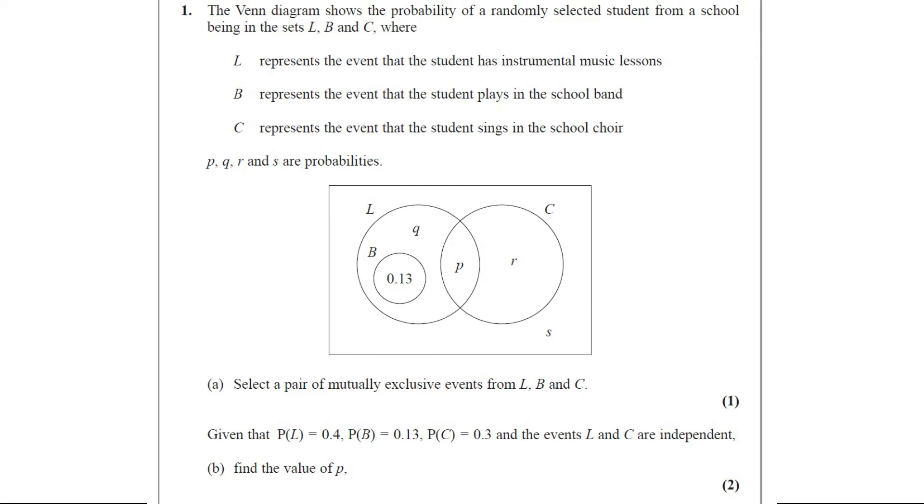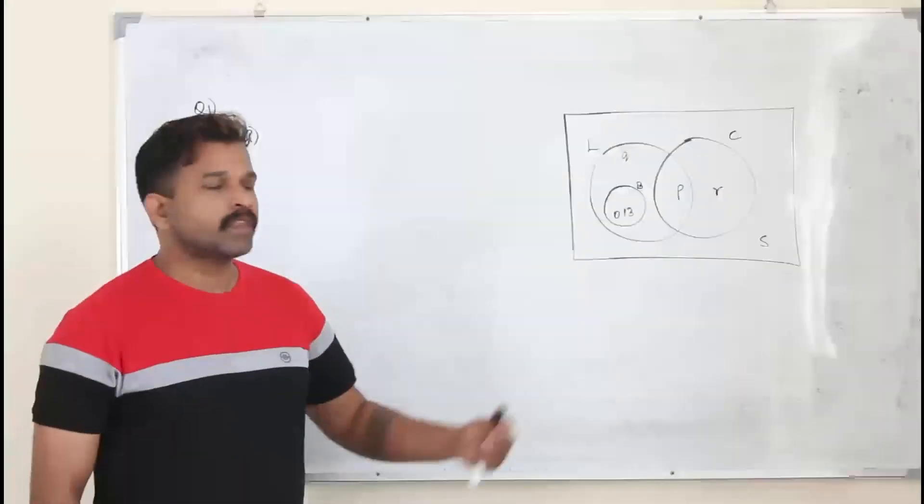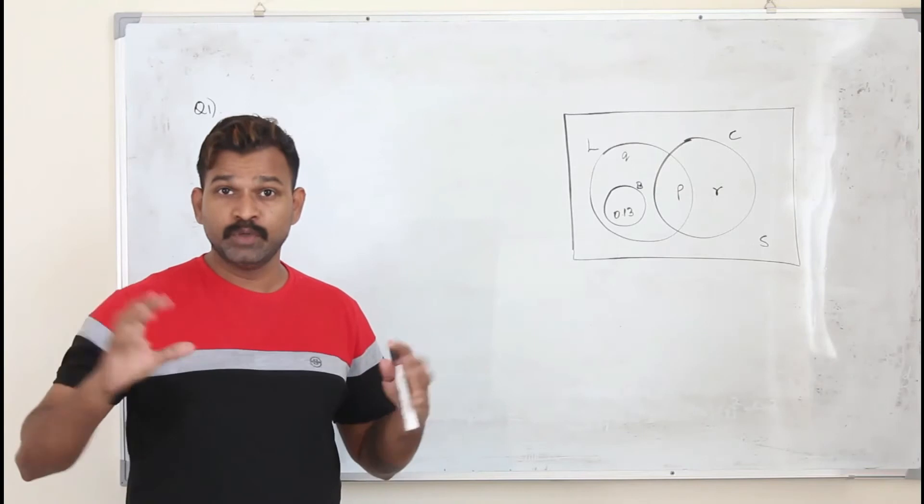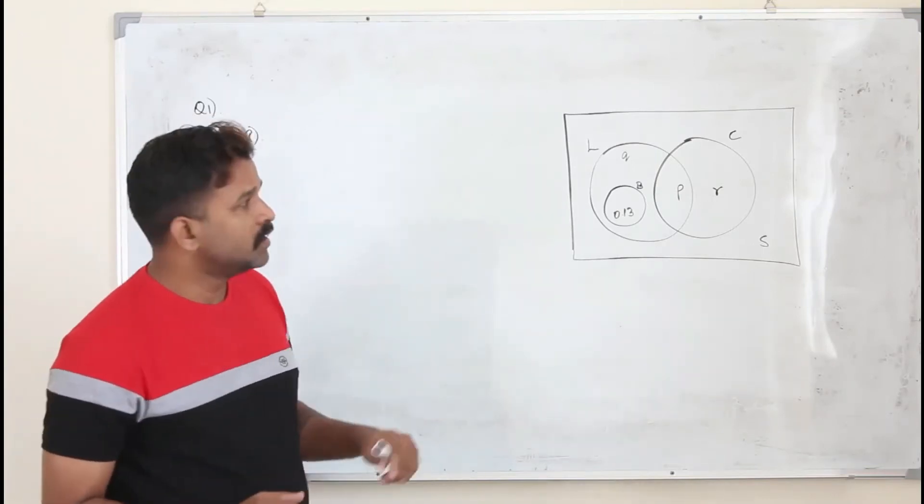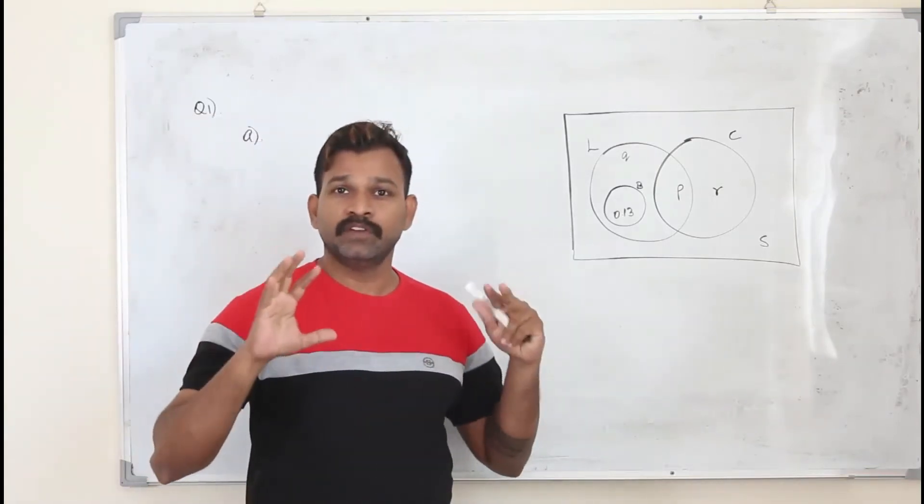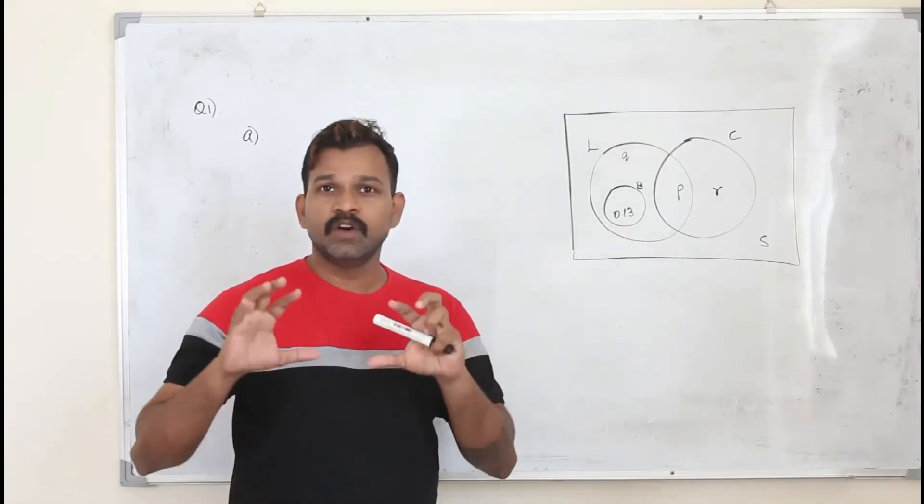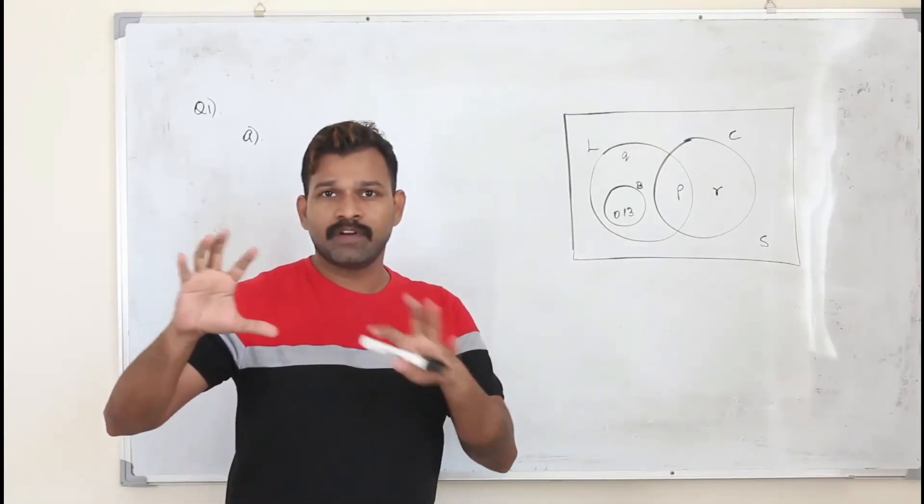Part A. Select a pair of mutually exclusive events from L, B and C. They want you to find two mutually exclusive events. When they say mutually exclusive, remember this: in the Venn diagram, you need to look for two non-overlapping circles.